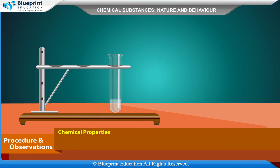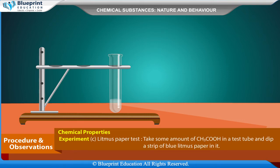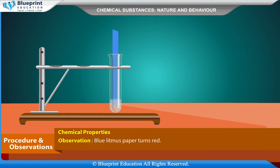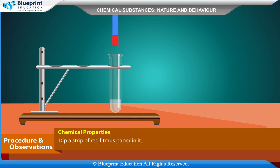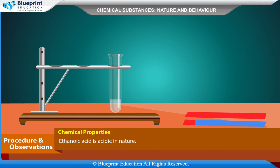Chemical Properties — Experiment: Litmus paper test. Take some CH3COOH in a test tube and dip a strip of blue litmus paper in it. Observation: Blue litmus paper turns red. Inference: Ethanoic acid is acidic in nature. Dip a strip of red litmus paper in it — red litmus paper remains red. Ethanoic acid is acidic in nature.